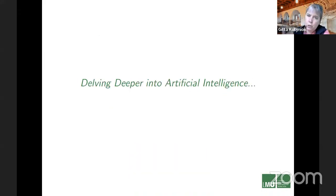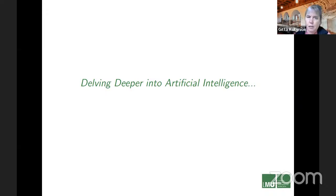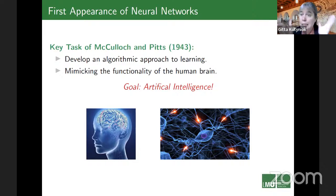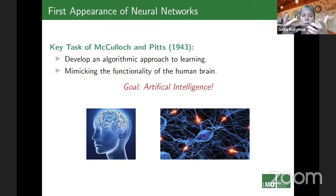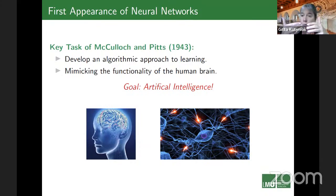Let me first give a gentle introduction into artificial intelligence to set common ground. Everything started in 1943 with McCulloch and Pitts, whose goal was artificial intelligence. What they did was to mimic the functionality of the human brain — humans at least believe we are intelligent, so they aimed to mimic how neurons work, connected in a network, to create artificial neurons and then an artificial neural network.